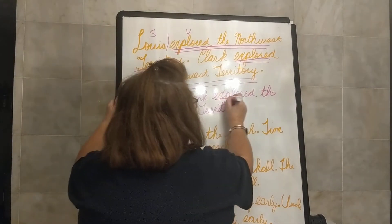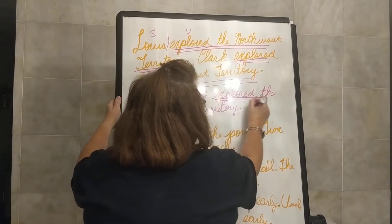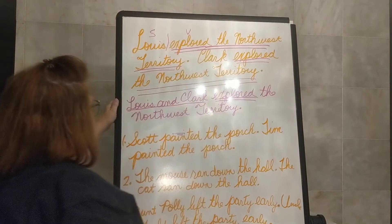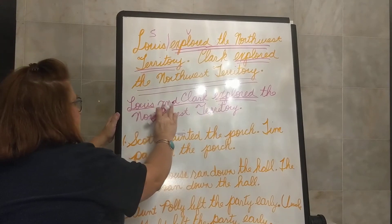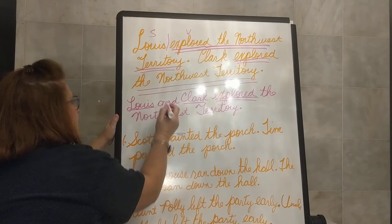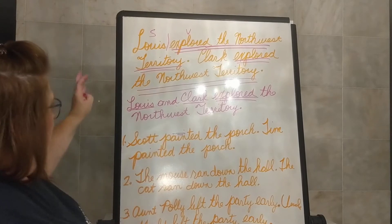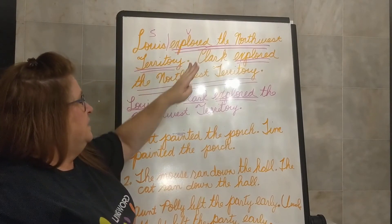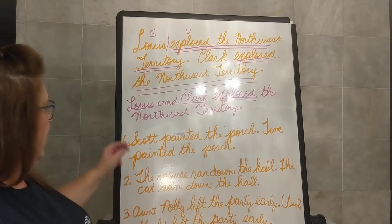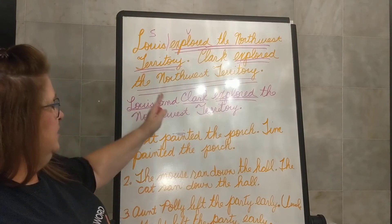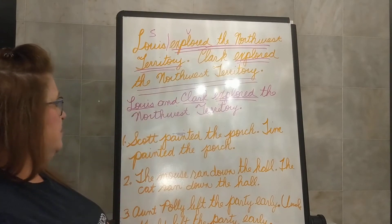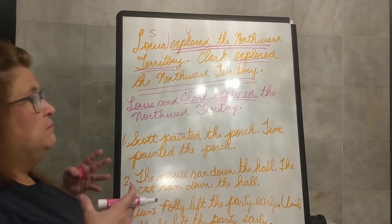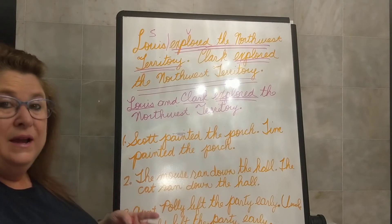So our verb is explored. Who or what explored? Lewis and Clark. So we just combined these sentences to make a compound subject. Lewis and Clark explored the Northwest Territory. That sounds much smoother if you were reading it or writing.